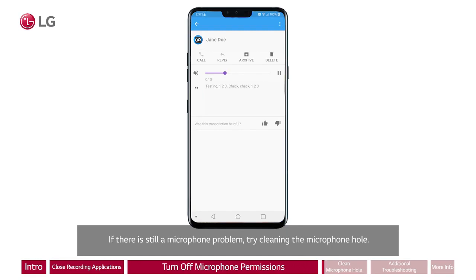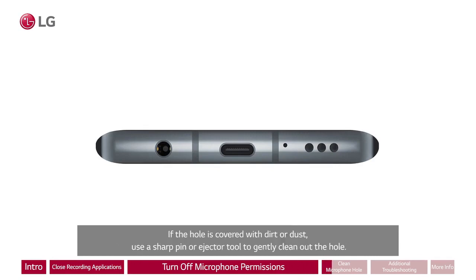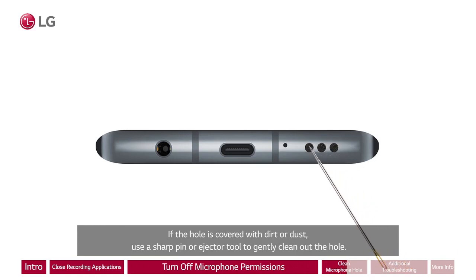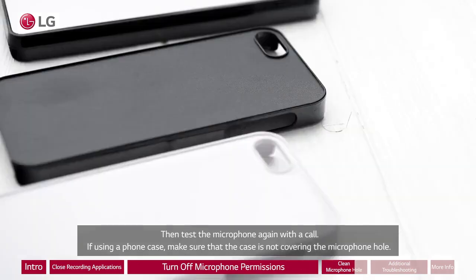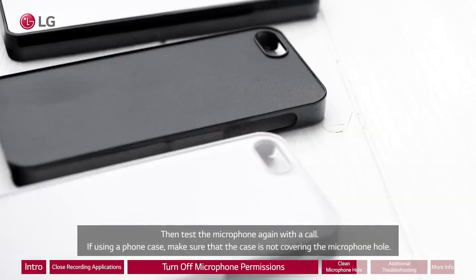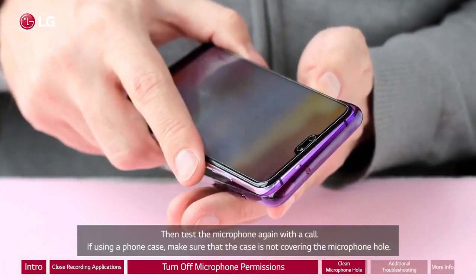If there is still a microphone problem, try cleaning the microphone hole. On the bottom of the phone, the three microphone holes may be blocked by dirt. If the hole is covered with dirt or dust, use a sharp pin or ejector tool to gently clean out the hole. Then test the microphone again with a call. If using a phone case, make sure that the case is not covering the microphone hole.